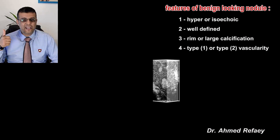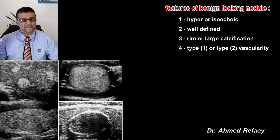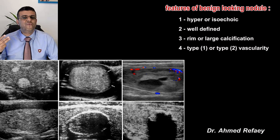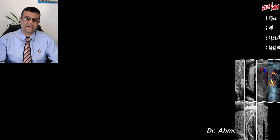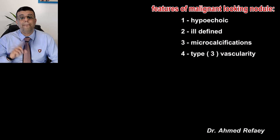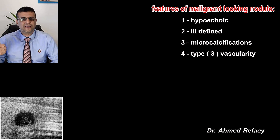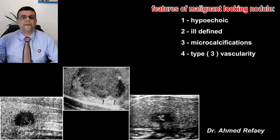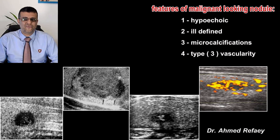To summarize: features of a benign-looking nodule are — hyper-echoic or iso-echoic, well-defined margins, rim calcification or large coarse calcification, and no flow or vascularity only at the capsule of the nodule. Features of malignant-looking nodules are — hypo-echoic, ill-defined outline even in part of the nodule, central microcalcification, and increased intranodular vascularity.